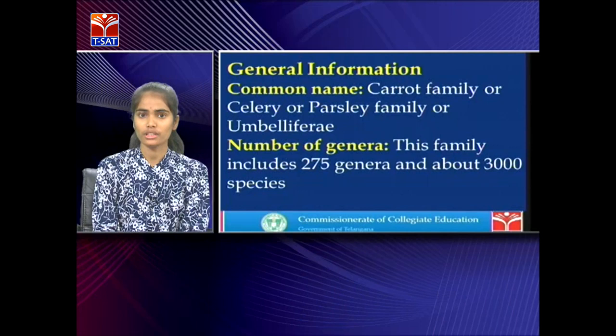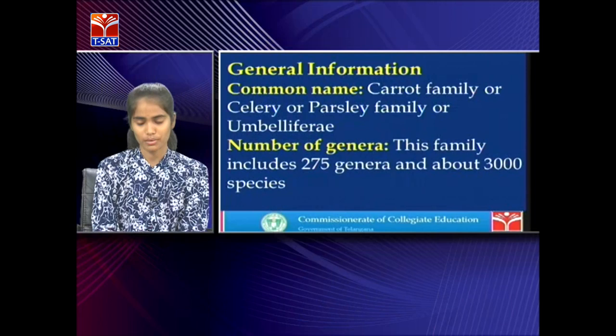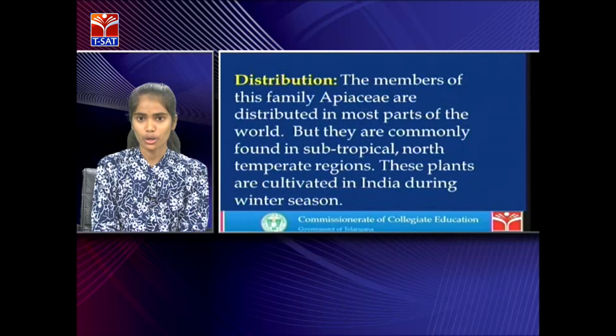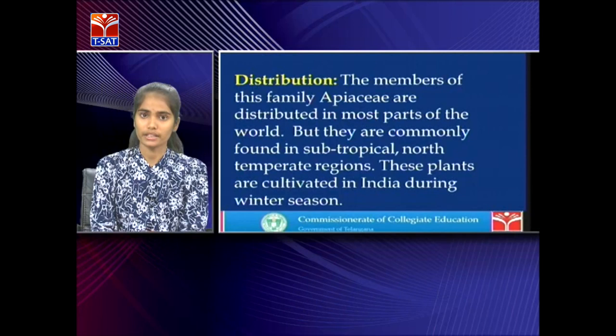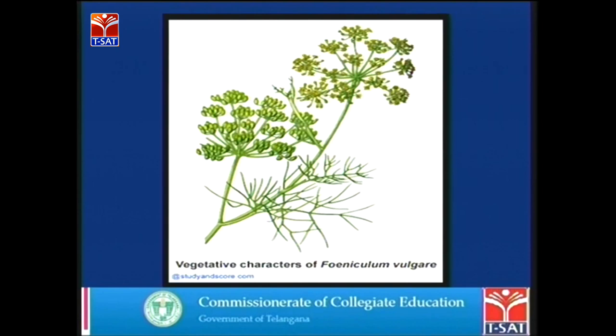This family is commonly known as the carrot family, celery family, parsley family, or Umbelliferae. It includes 225 genera and about 3000 species distributed in most parts of the world, commonly found in subtropical and north temperate regions. These plants are cultivated in India during the winter season.